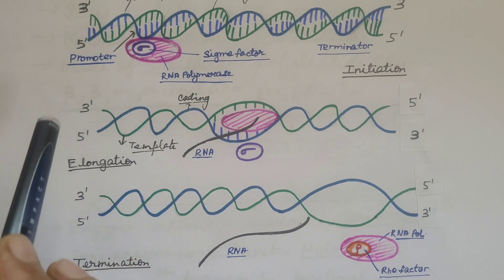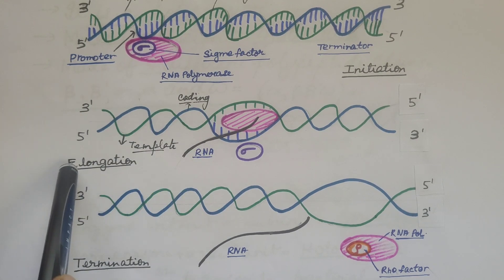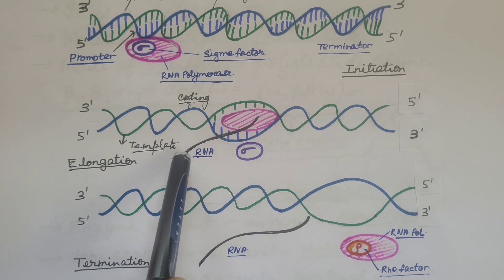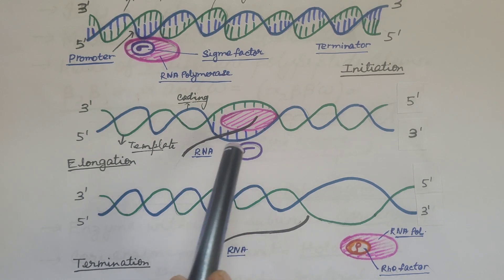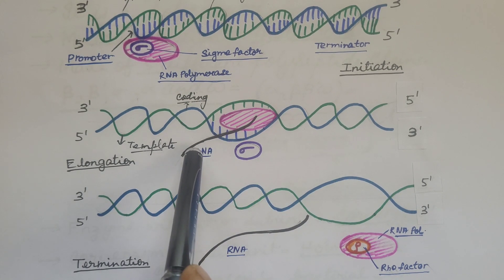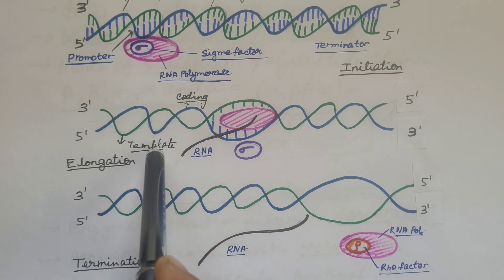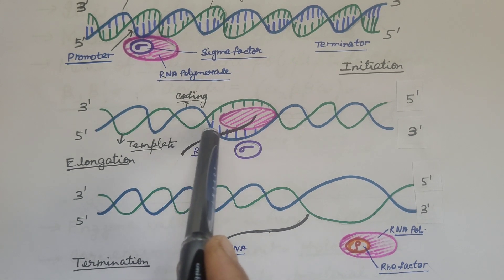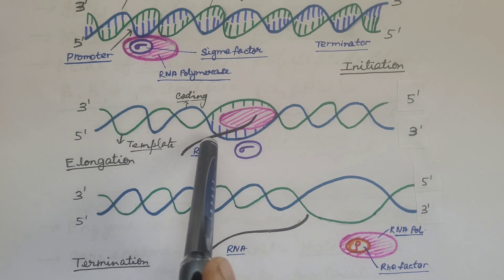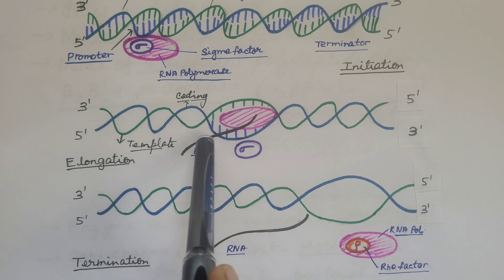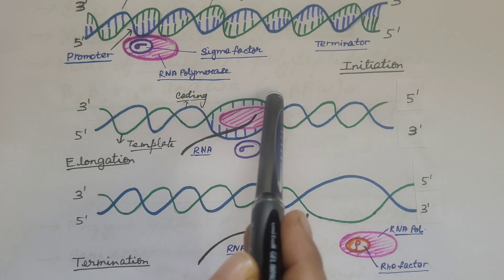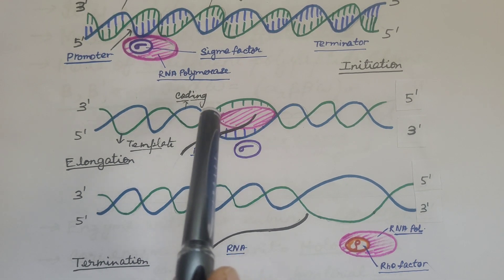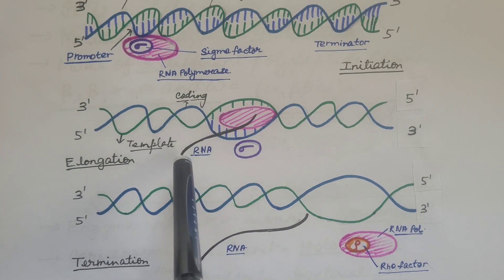The second step is elongation. The core enzyme, in the absence of sigma factor, continues the synthesis of the RNA strand, which gets longer. The substrate involved in elongation is nucleoside triphosphate, added in a template-dependent fashion following the rule of complementarity. Complementary bases of the template strand are added during elongation, with the exception that instead of thymine, uracil is added in the RNA.